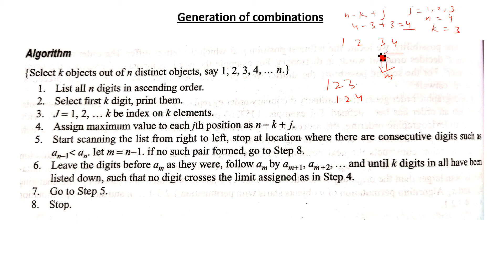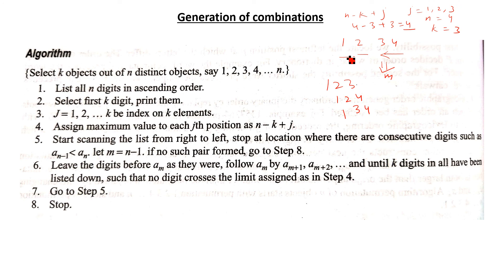Again we scan the list from right to left. The 2 can be replaced by 3, giving the next combination. Then moving further left, the 1 can be replaced by 2. These give all four total combinations.